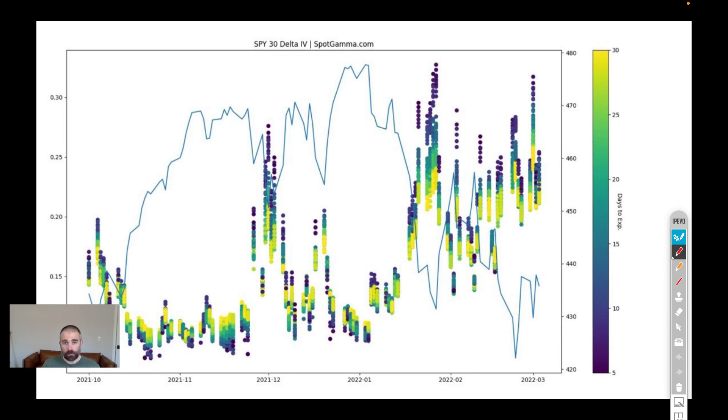On your screen, we have the implied volatility on a closing basis of spiders. This chart only shows options that have a 30 delta, going back to October of last year. Each of these colors represents a different days to expiration. Blue is shorter days to expiration at five, and then we go up to 30 in this chart.